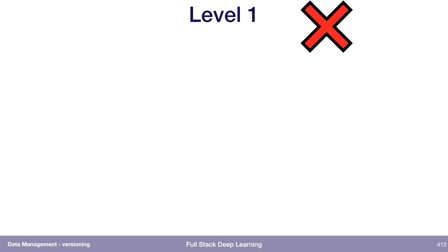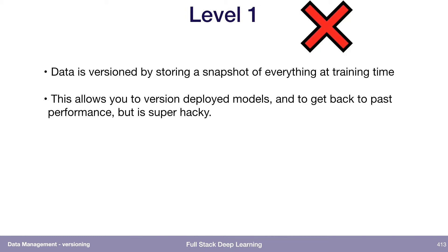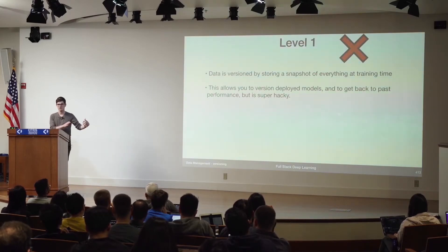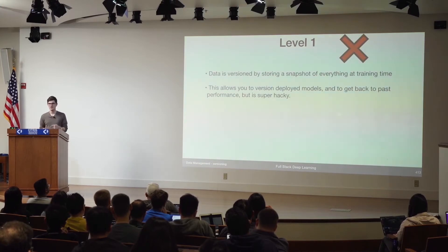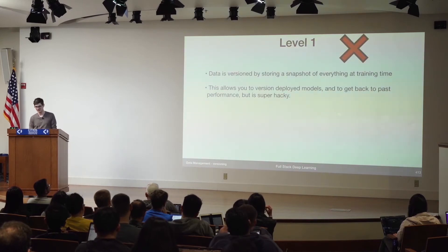A simple thing you might do is, every time I train or every time I deploy, I'll take a snapshot of the data that I trained on and store that somewhere. Now you can actually say that your artifact is versioned, because there's a git hash for the code, and now there's a snapshot of the data. But it's super hacky, right? We have the git hash of the code — we don't have a zip file of all the code that you used. So let's try to have something similar for the data, and not just essentially have a zip file of all the data that you used.